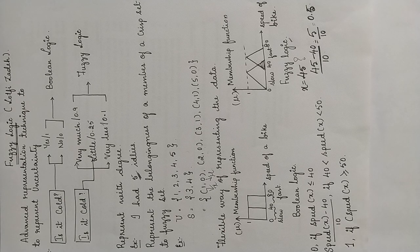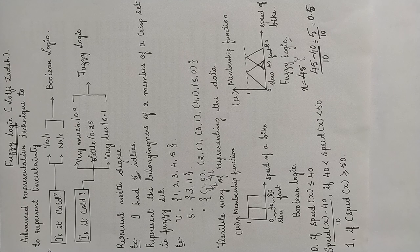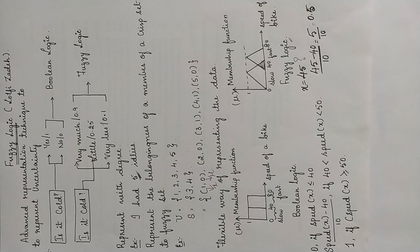In Boolean logic, 1 represents complete true and 0 represents complete false. So if you want to represent the continuous value, then Boolean logic will be a failure. Hence, fuzzy logic is an advanced representation technique to represent uncertainty, to represent with degree, and to represent the belongingness of a member of a crisp set to a fuzzy set.